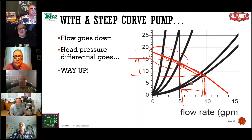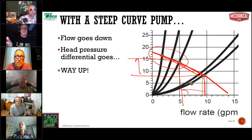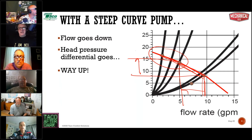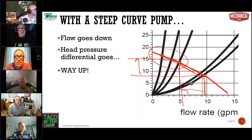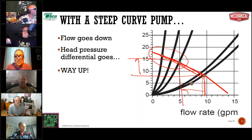So what do people do to deal with this? For some reason it has become the industry standard to install a pressure differential bypass valve on zone valve jobs. But a pressure differential bypass valve is simply a band-aid for a self-inflicted wound — the price you pay for using the wrong pump. What does a pressure differential bypass valve do? In its simplest form, it turns a steep-curve pump into a flat-curve pump. So if all it does is turn a steep-curve pump into a flat-curve pump, why wouldn't we just use a flat-curve pump in the first place?